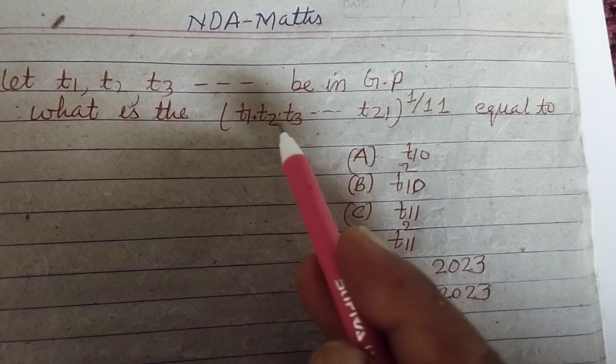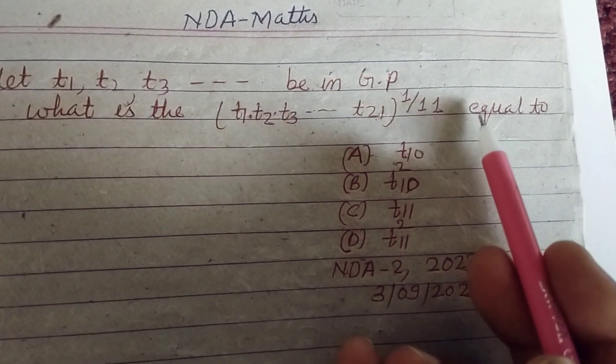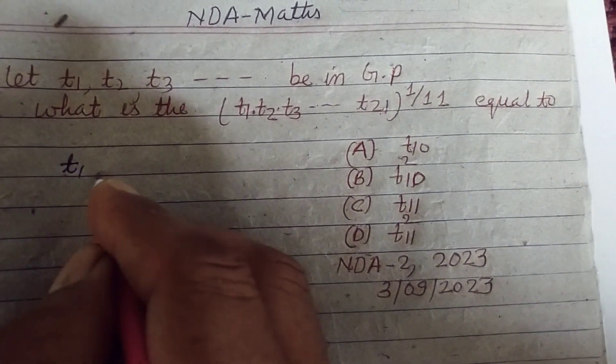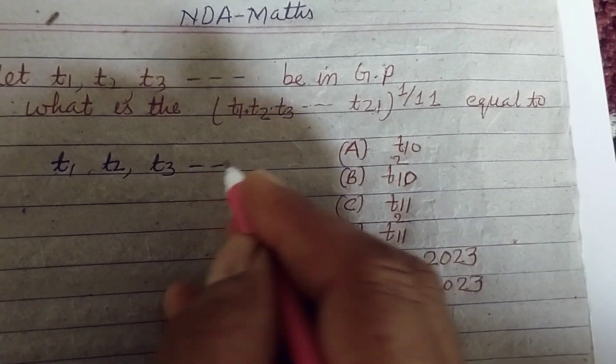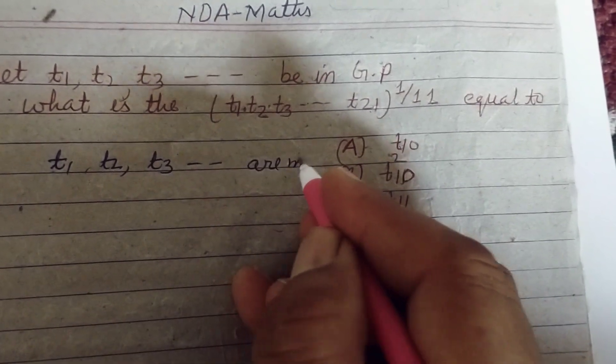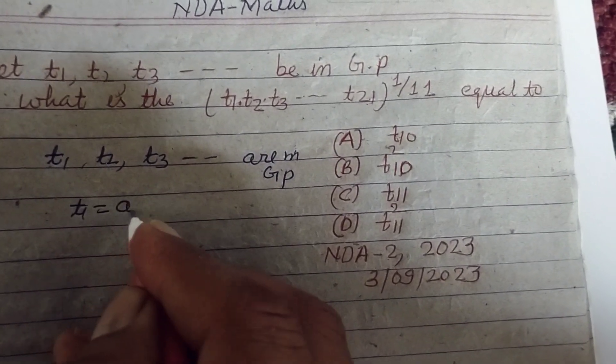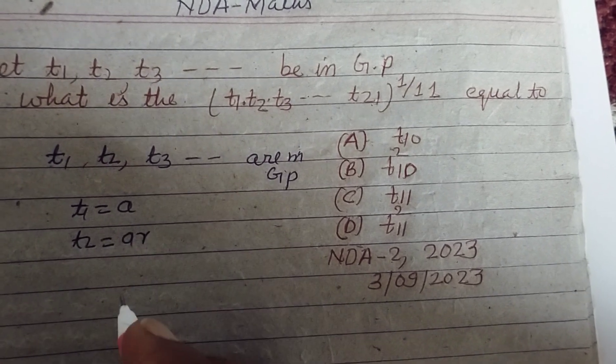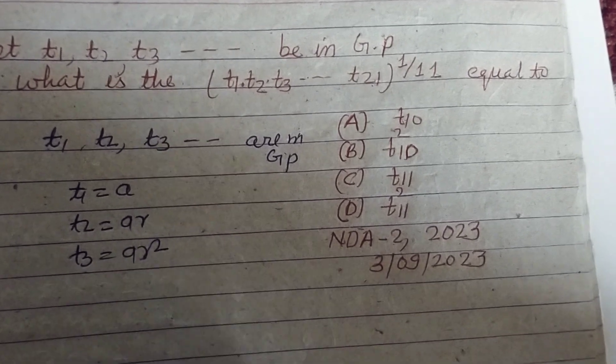What is the value of (t1 · t2 · t3 ... t21)^(1/11) equal to? So student, t1, t2, t3 are in GP. So let t1 is a, t2 is ar, t3 is ar² in this way.